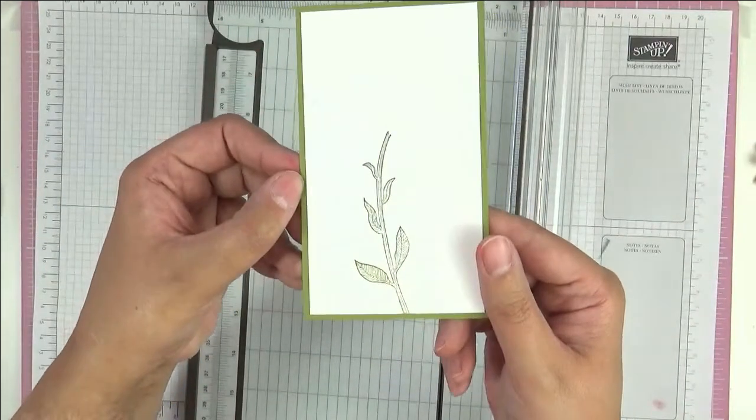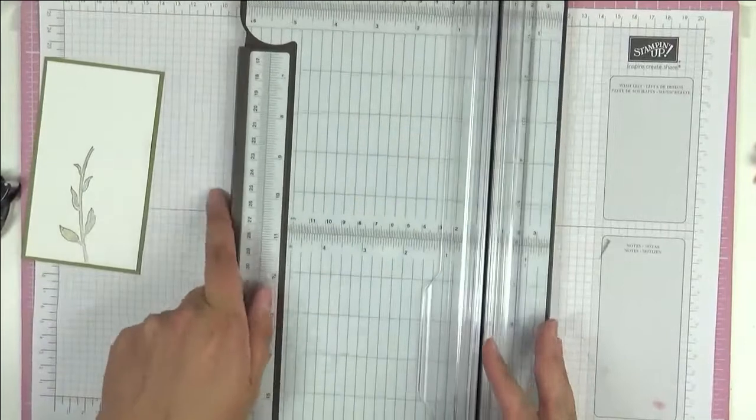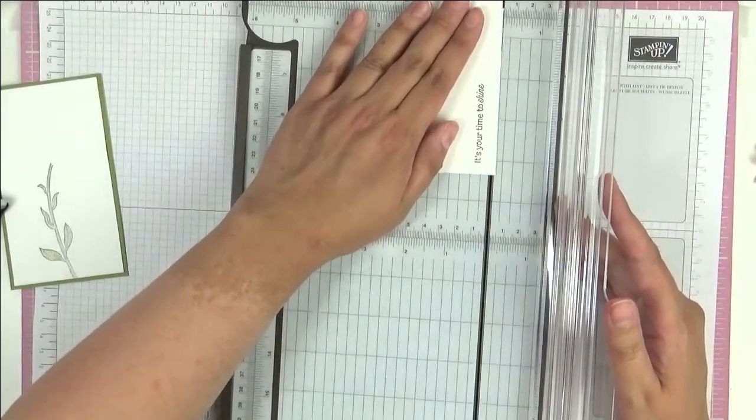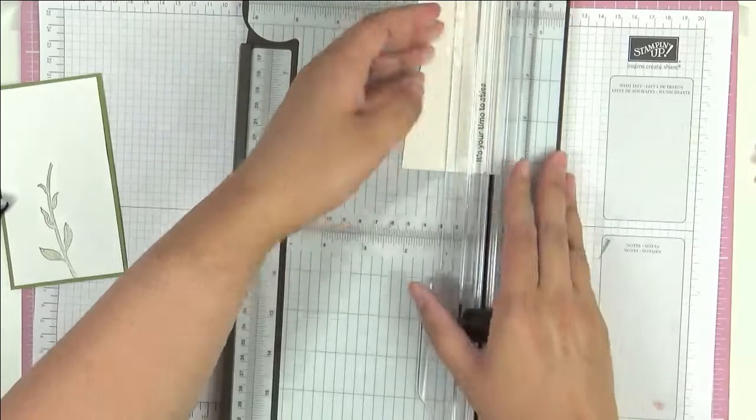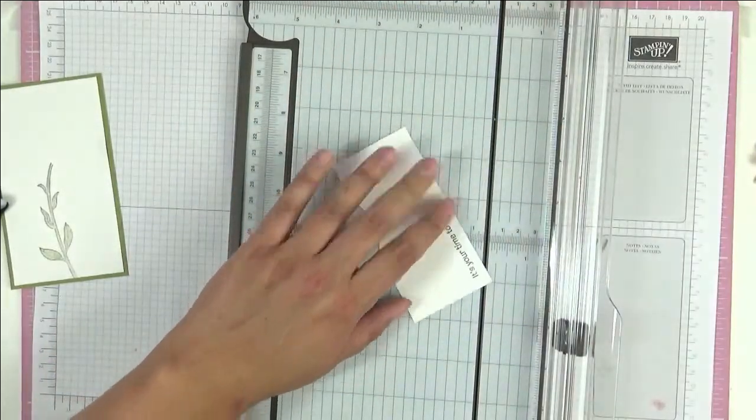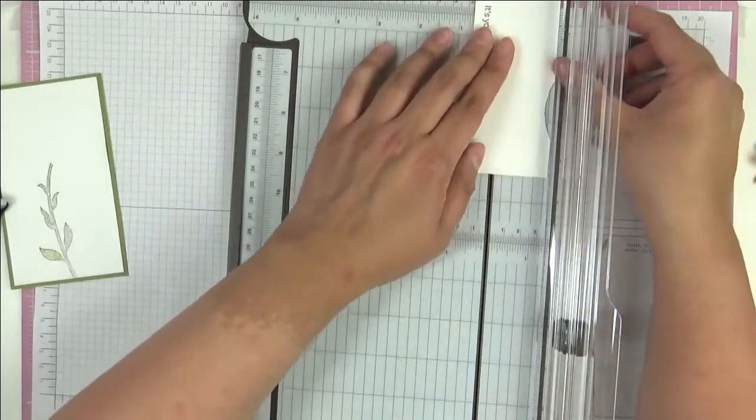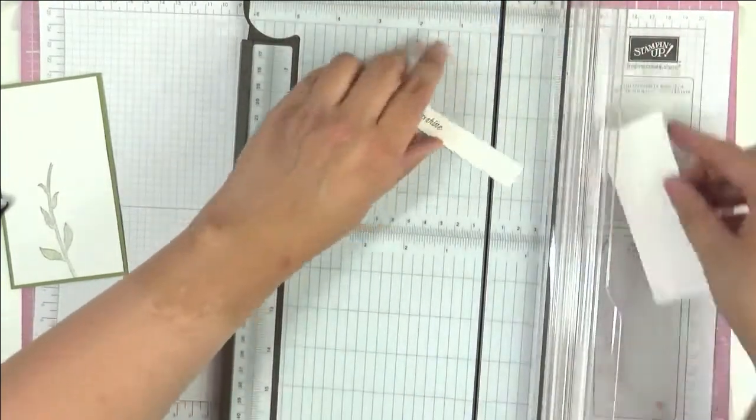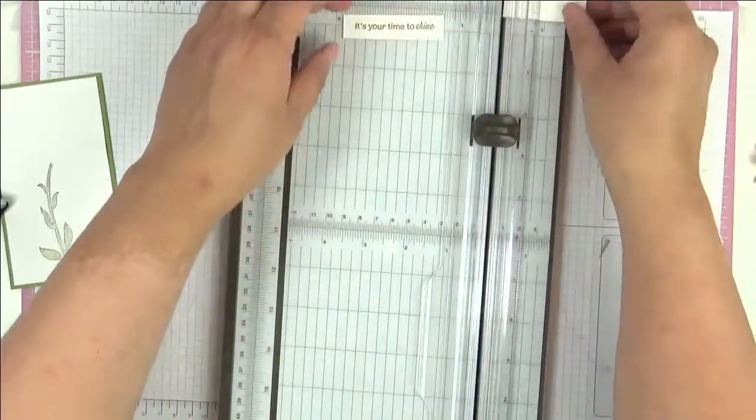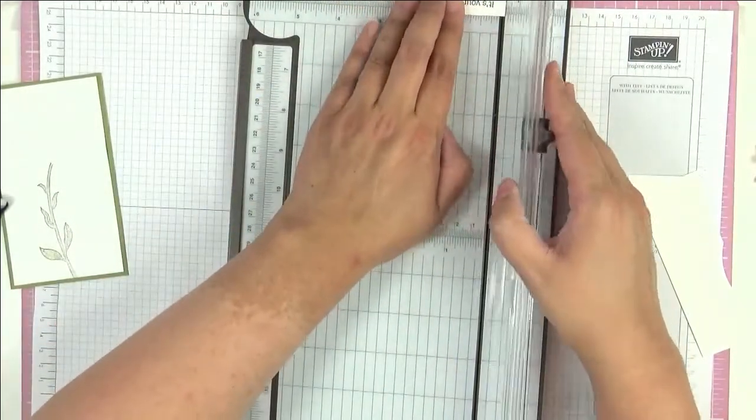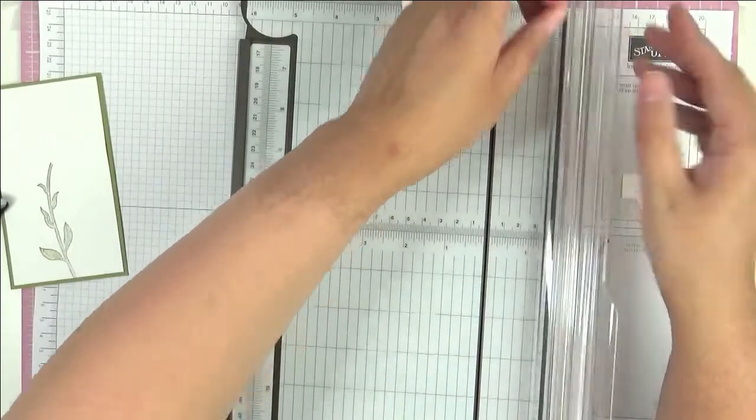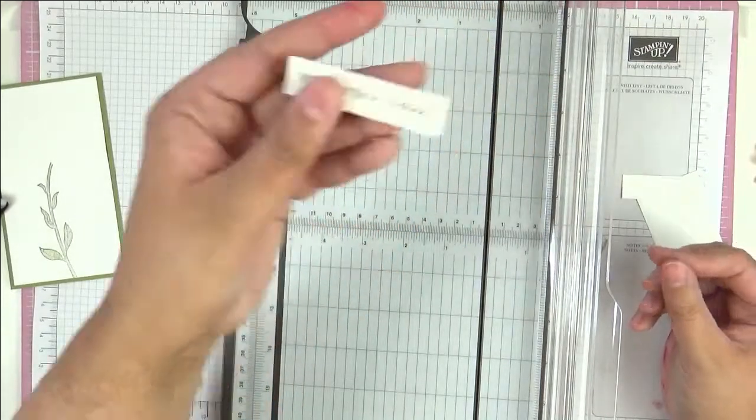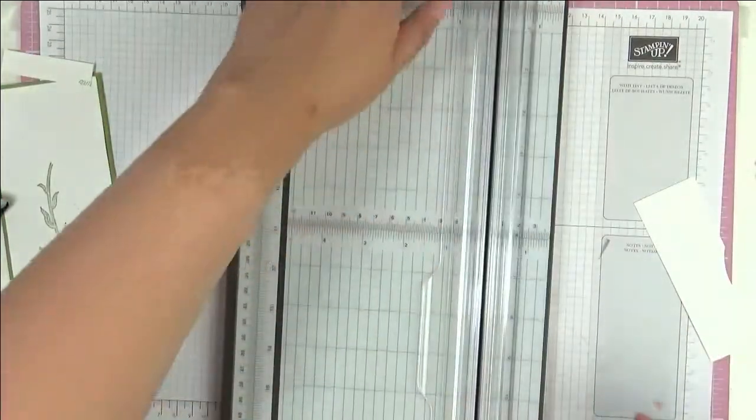So now I have a piece here of Old Olive that I'm going to mat this piece on. And then I'm just going to cut. My snail's given up the ghost, let's go back to Tombow. I'm just going to mat up here and then just cut it out just using the trimmer. So there we have our piece.